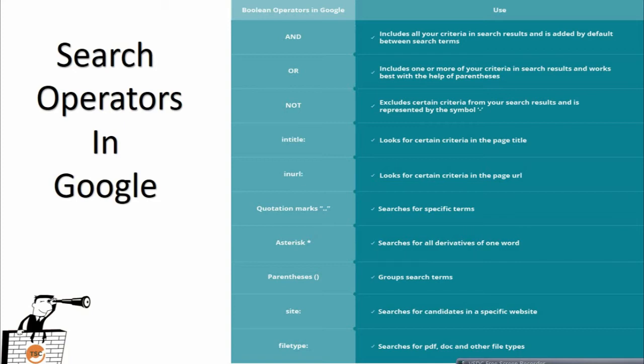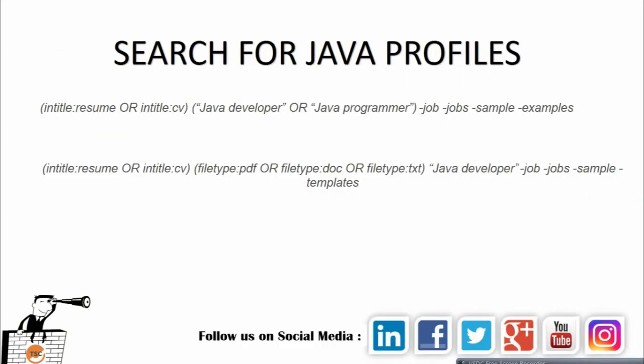Quotation marks are used for a specific term. Asterisk is used for all derivatives of one word. Parentheses are used to group search terms. Site is used to search for candidates on a specific website, and filetype defines which type of file you are looking for on the internet.